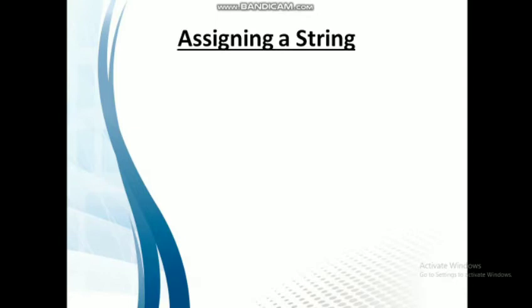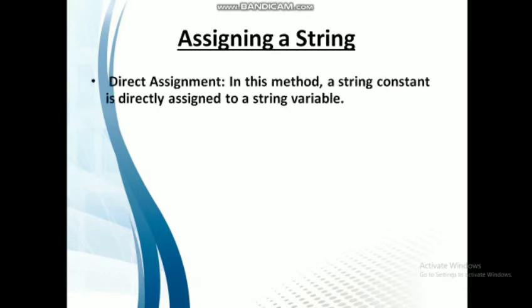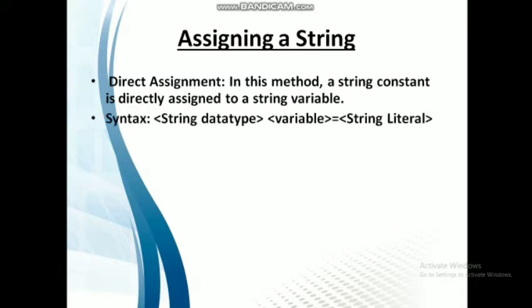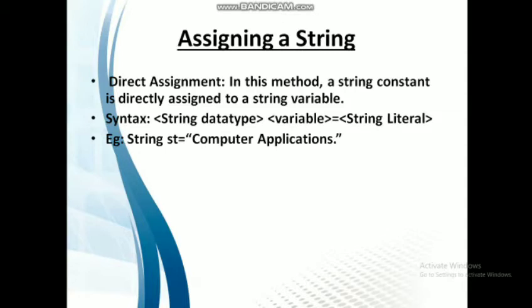There are two methods to assign a string. The first method is direct assignment, where a string constant is directly assigned to a string variable. The syntax is: String variableName = "string literal". For example: String st = "computer applications"; here 'computer applications' is a string literal that has been assigned to the variable st directly.